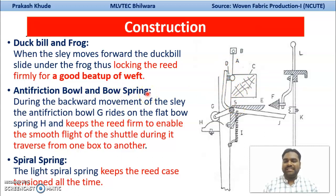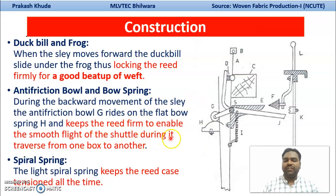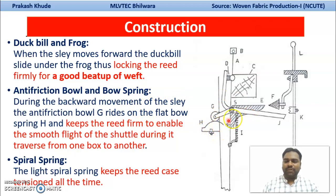The anti-friction bowl and bow spring are basically important when the slay is moving backward. During the backward movement, there is a transfer of your shuttle from one shuttle box to the other. During that passage, the reed should be firm because the reed has contact with your shuttle, and there should be smooth flight of your shuttle during that movement. The reed being firm is achieved by your anti-friction bowl. The spiral spring is normally required to keep this reed under tension at all times — this is the normal pressure tension needed to keep the reed firm.